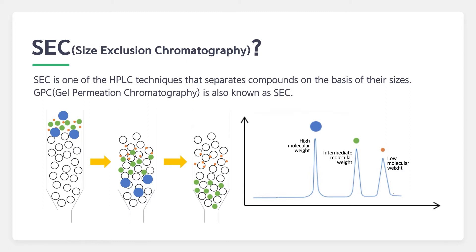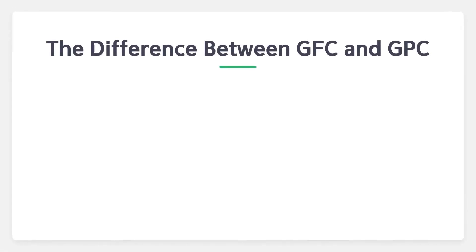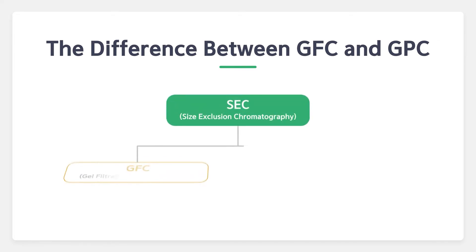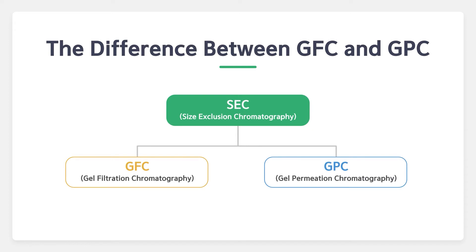Larger molecules barely permeate the pores, so larger molecules are eluted from the column earlier and smaller molecules later. Although GPC, GFC, and SEC describe the same liquid chromatographic techniques, in terms of soluble solvent type, SEC is categorized into two techniques: GPC and GFC.